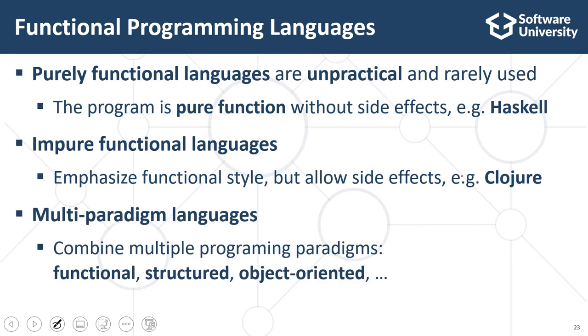Multi-paradigm languages combine the strengths of both the functional and the algorithmic or imperative world. Most of today's widely used general-purpose programming languages are multi-paradigm. They combine multiple programming paradigms like functional programming, declarative programming, object-oriented, component-based, event-driven programming, and many others.